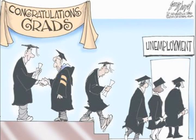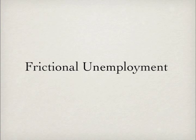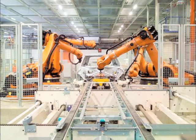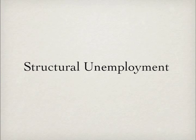An unemployed college graduate is looking for her first job — this would be frictional unemployment. Advances in technology make the assembly line worker's job obsolete — this would be structural unemployment.